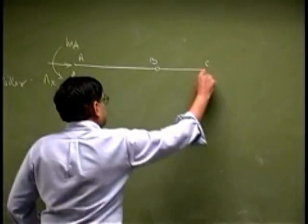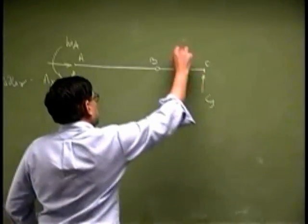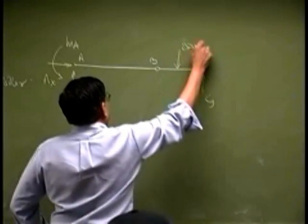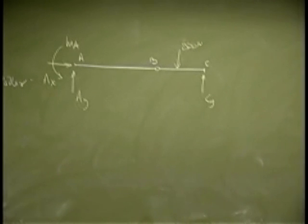Then you have C, that's a roller, you're going to place another reaction, plus you have a force here, plus 2500 Newton, so that's just the direct free body diagram for this problem.